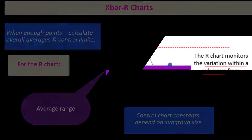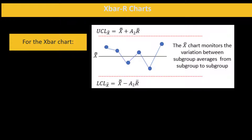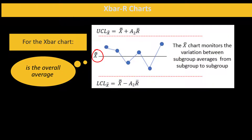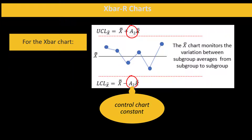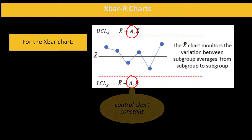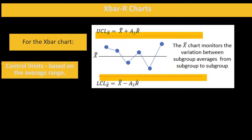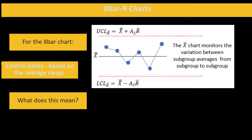Starting with the range chart: you calculate the average range — that's the center line. Then you have your upper and lower control limits, which are based on control chart constants that depend on subgroup size. The R-chart monitors the variation within a subgroup from subgroup to subgroup. For the X-bar chart, we monitor the variation between subgroup averages. We calculate our overall average, called X-double-bar, then calculate control limits using A2, the control chart constant that depends on subgroup size.